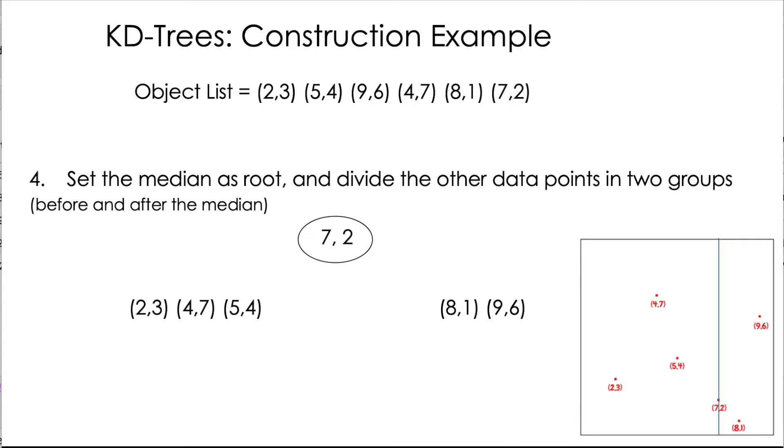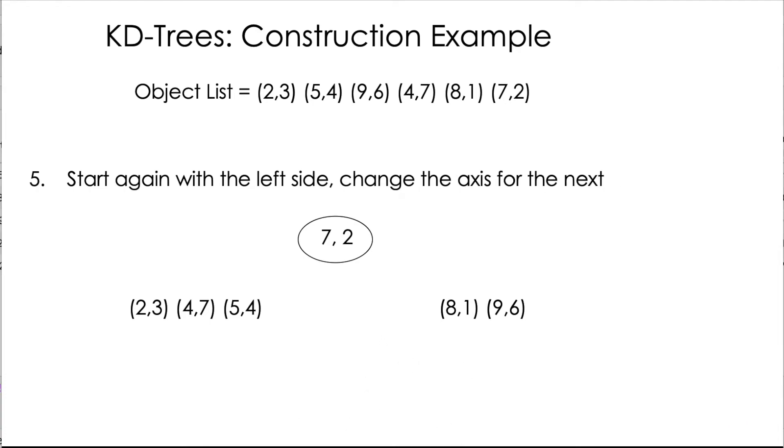So now we have the root of the tree and these two groups. And guess what comes now? Basically, a recursive call that is going to do the same for each of the sides of the root node. So now we start again with the left side. What it means, we need to again choose an axis, but now it's going to be the other one. We are rotating the axis. So if we start with x and then we go with y, x, y, x, y, and so on. If we had three dimensions, we will go x, y, z, x, y, z, and so on.